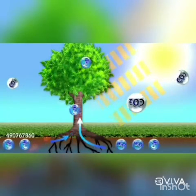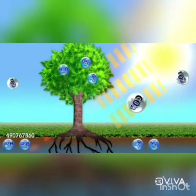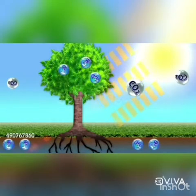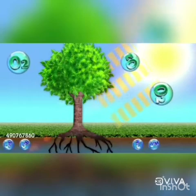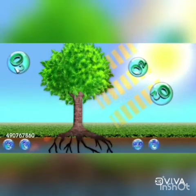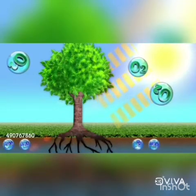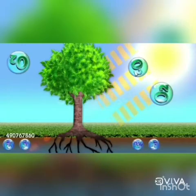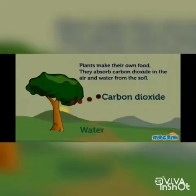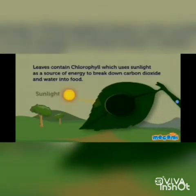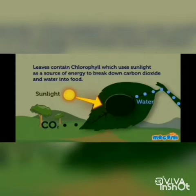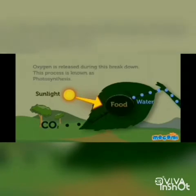However, during photosynthesis, water and carbon dioxide react chemically in the chlorophyll by absorbing sunlight to form glucose and oxygen. Jabki photosynthesis ke samay, chlorophyll mein water aur carbon dioxide chemically react karta hai. Sunlight ke presence mein aur is reaction mein glucose aur oxygen produce hota hai.